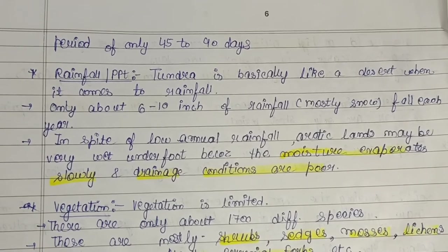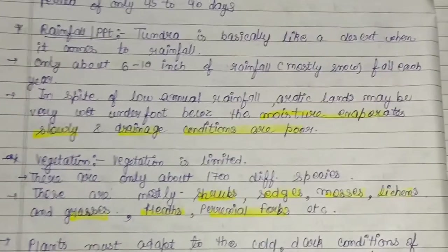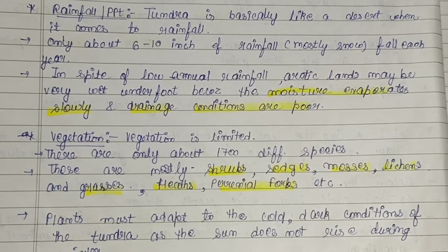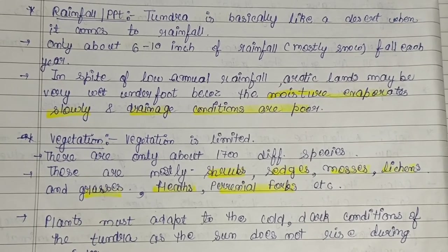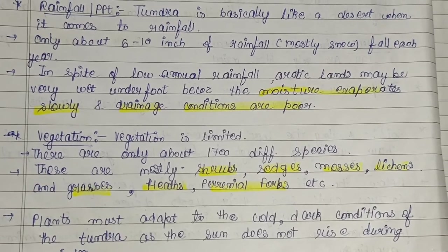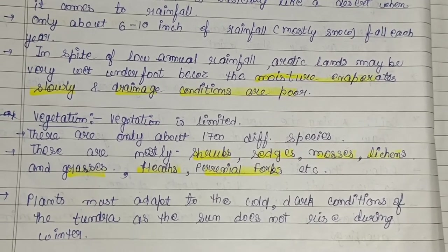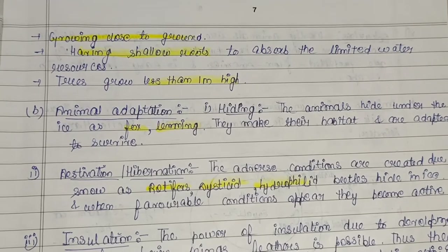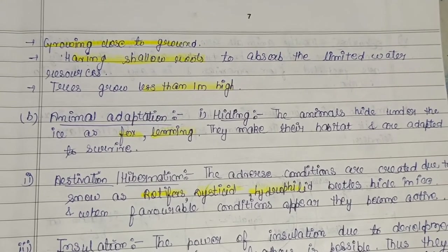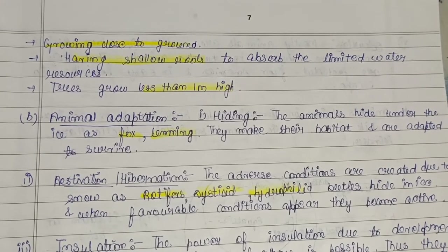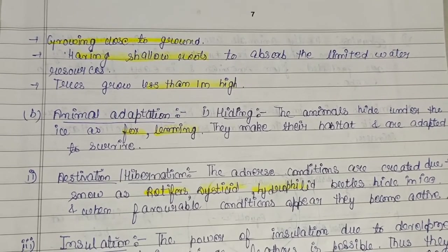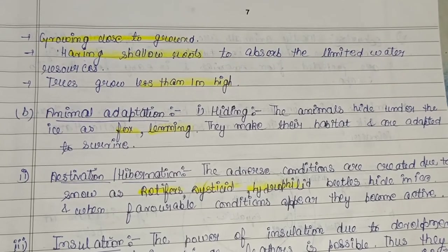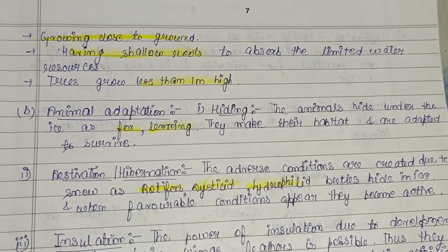Vegetation is limited in the tundra — only about 1,700 different species, mostly shrubs, sages, mosses, lichens, grasses, heaths, and perennial forbs. Plants must adapt to the cold, dark conditions; the sun does not rise during winter. One adaptation is growing close to the ground, because beneath the snow is permafrost and plants cannot send roots deep into frozen ground. Plants also have shallow roots to absorb limited water resources.